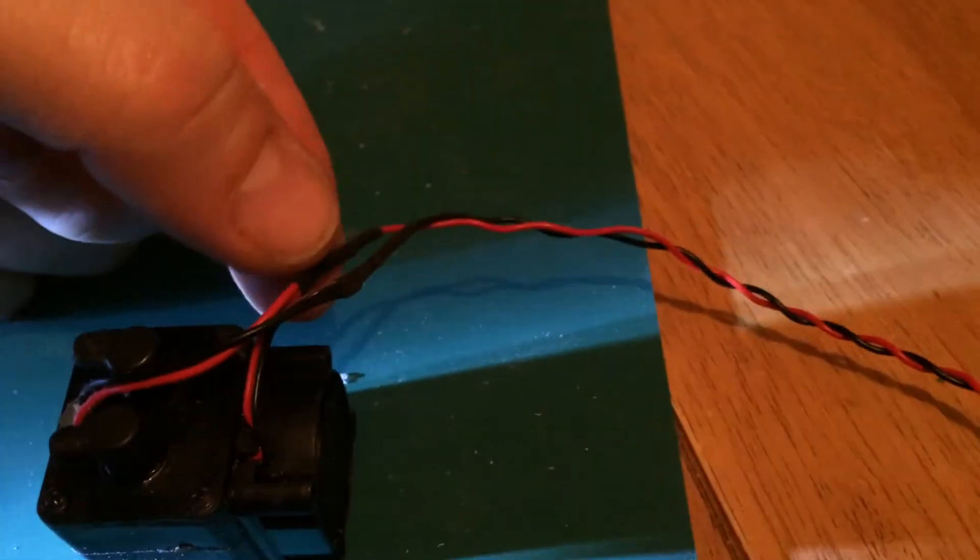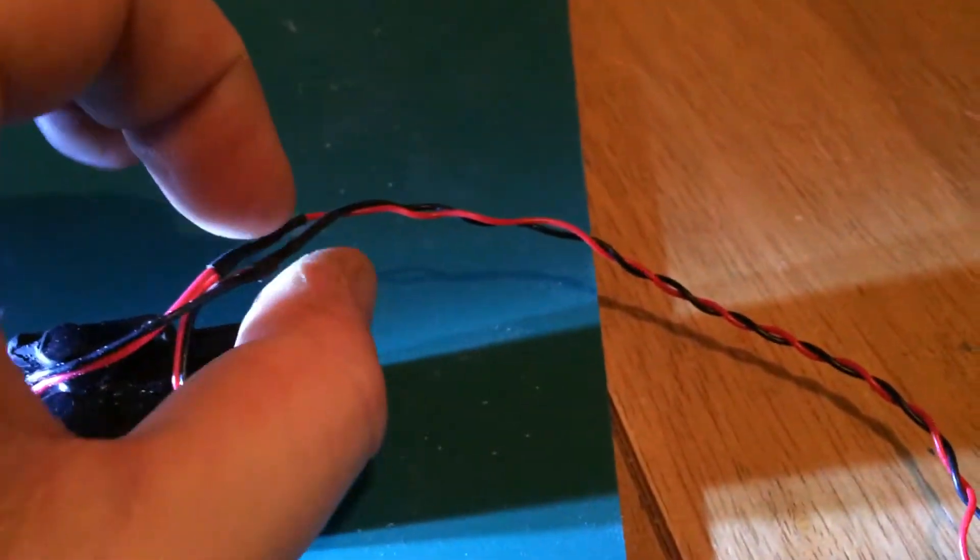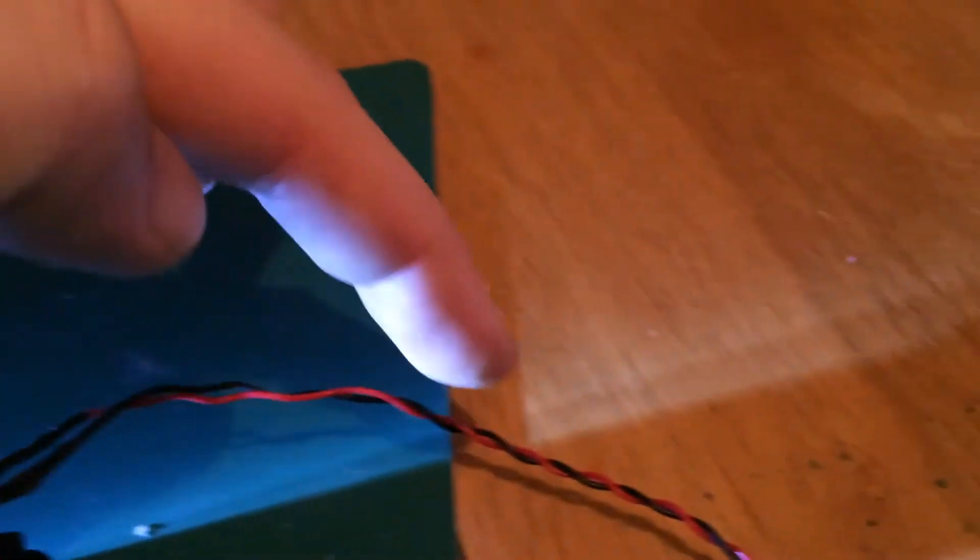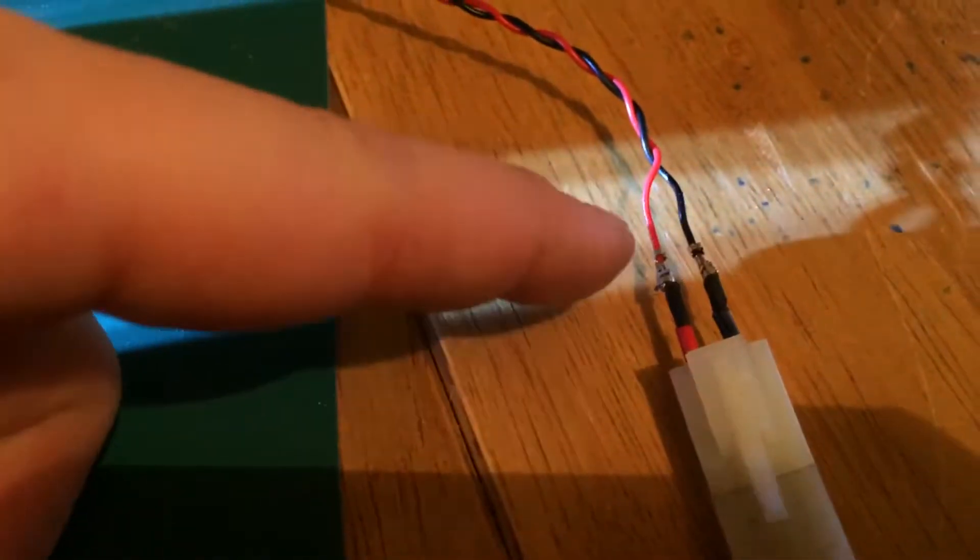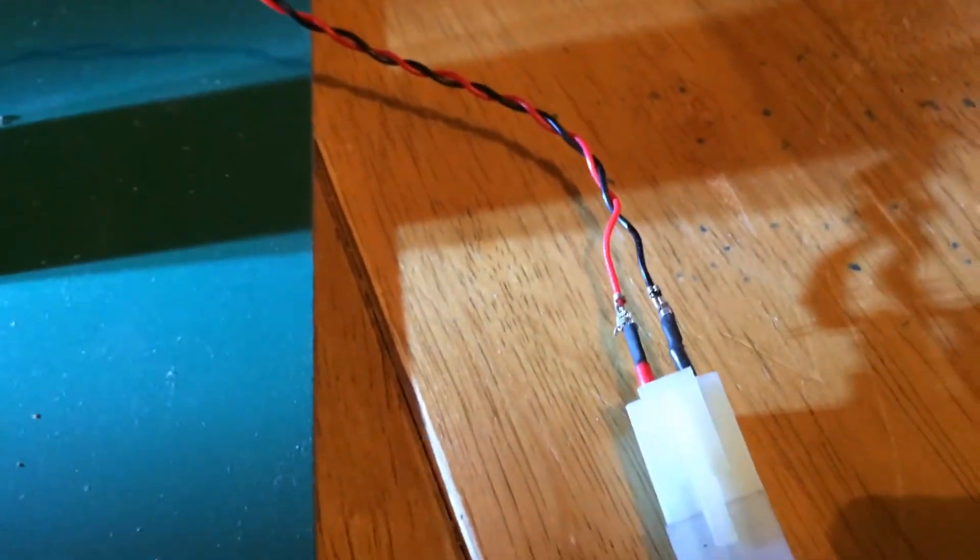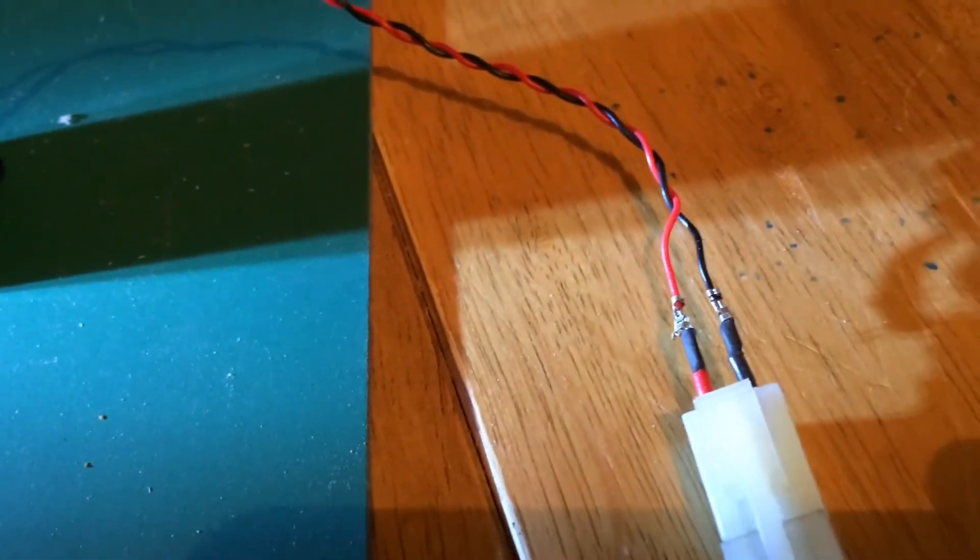So both positives are connected together there, both negatives are connected together there, and then they run in this case down to the battery. But obviously that would have a plug end on it and that will be connected into the smoke unit on the RX-18 board or whatever you're using.